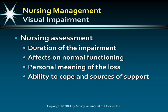When you're assessing someone for visual impairment, realize there are different levels. You want to know the duration — how long has this been going on? How has it impacted their functional abilities? What can they or can't they do? Has it affected their job, their activities, their daily ADLs, their self-esteem? Their feelings of usefulness are all things that you want to make sure you assess.